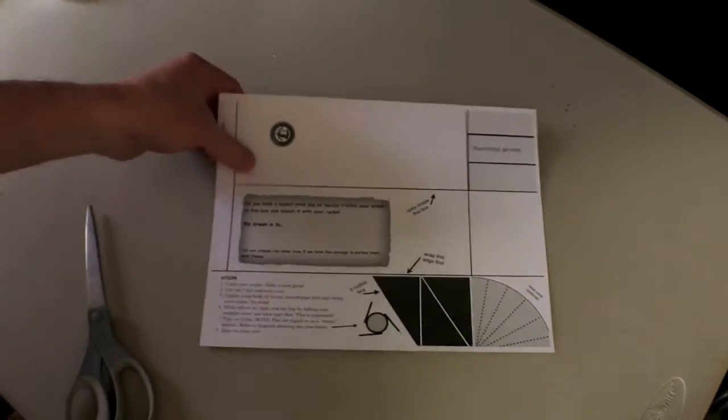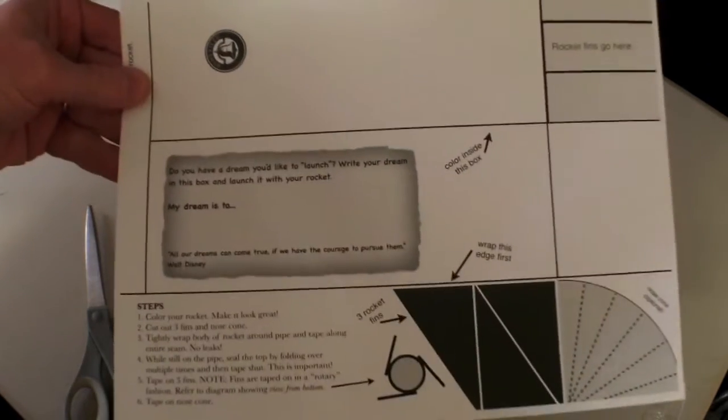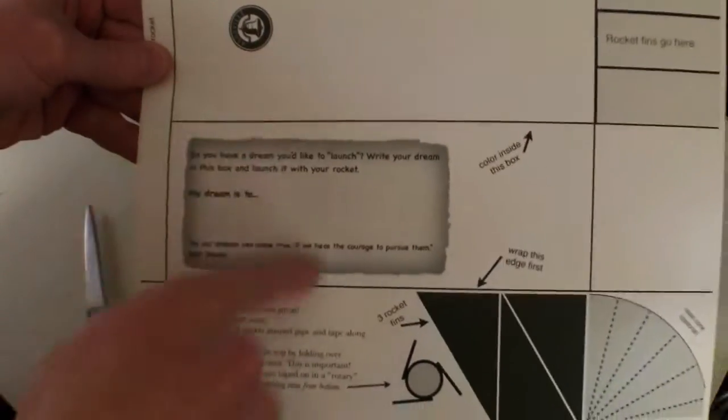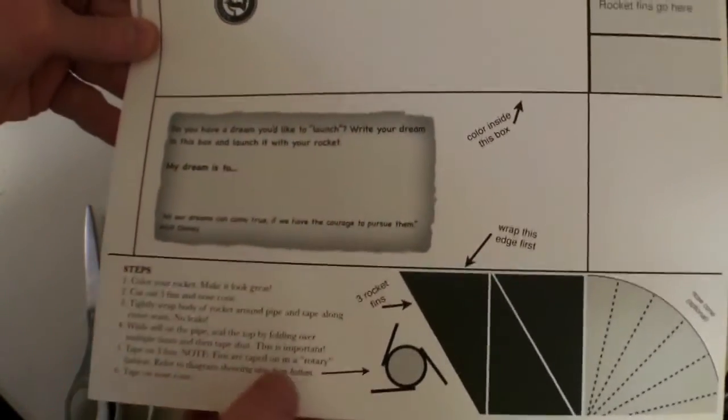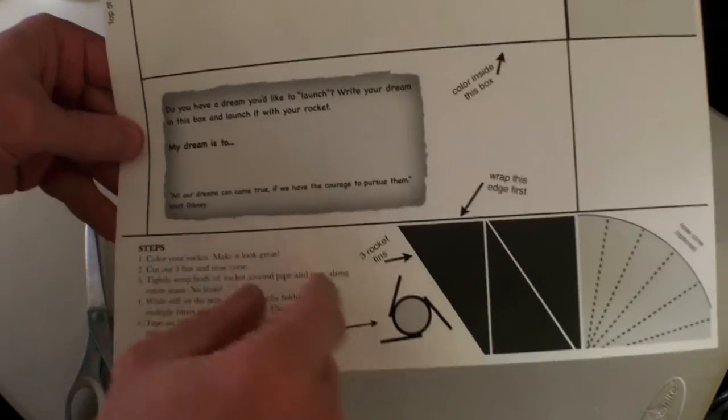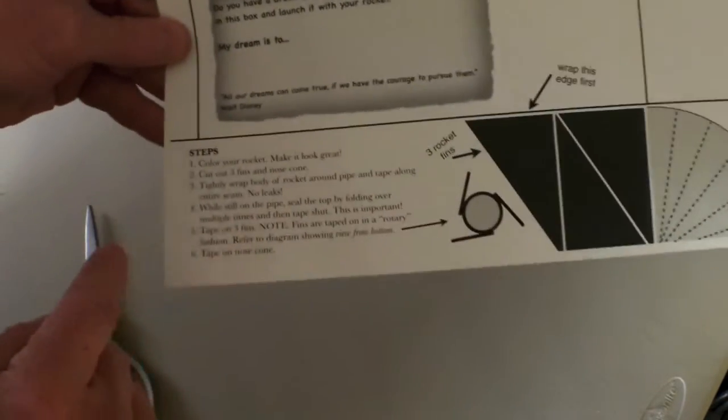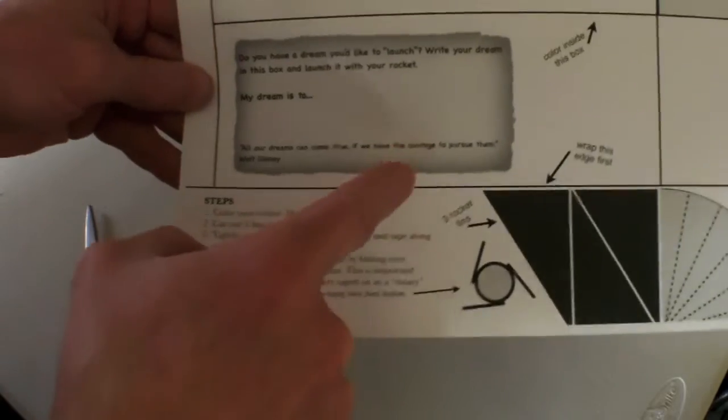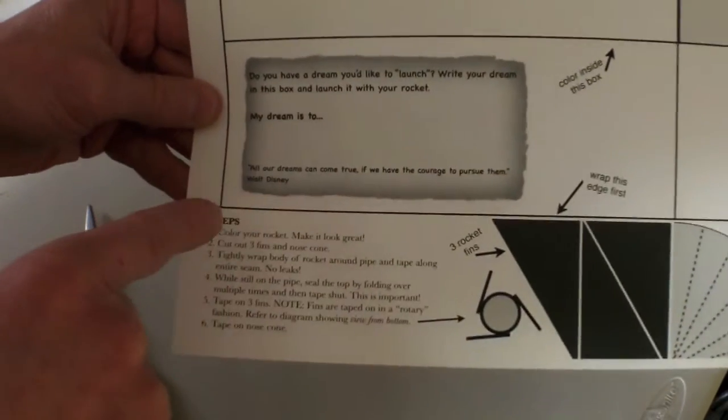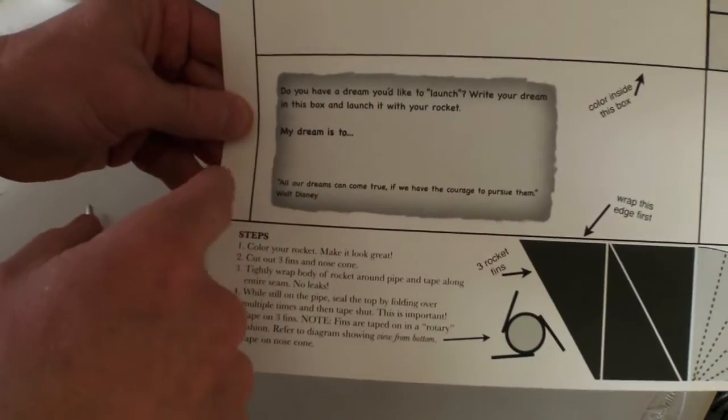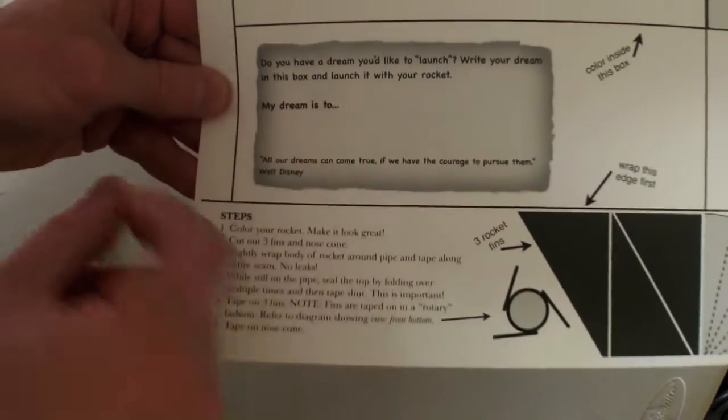In this template, you can see the body of the rocket, which is right here. Your template might look a little different than this. I have three fins here and a nose cone here and directions here. This area right here is to get kids thinking about a dream that they have, and they can write this in.